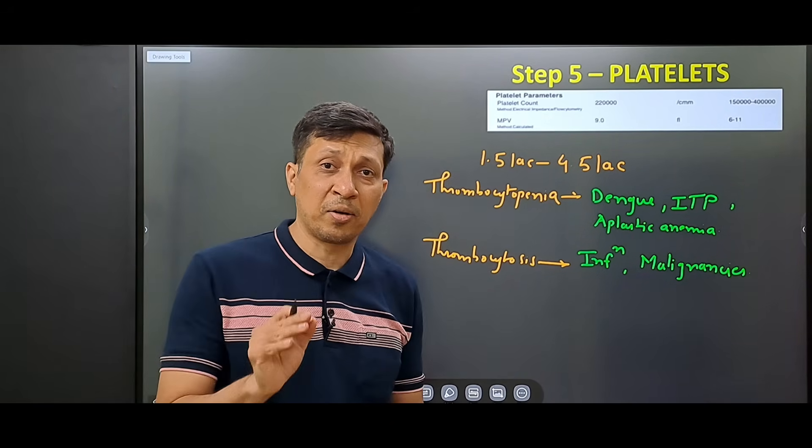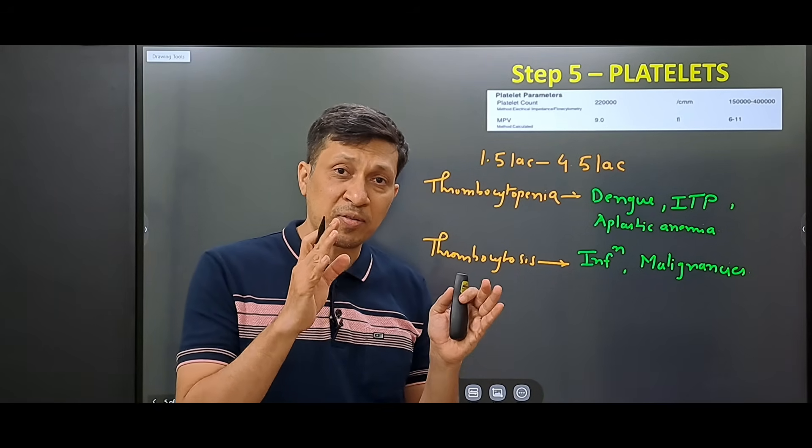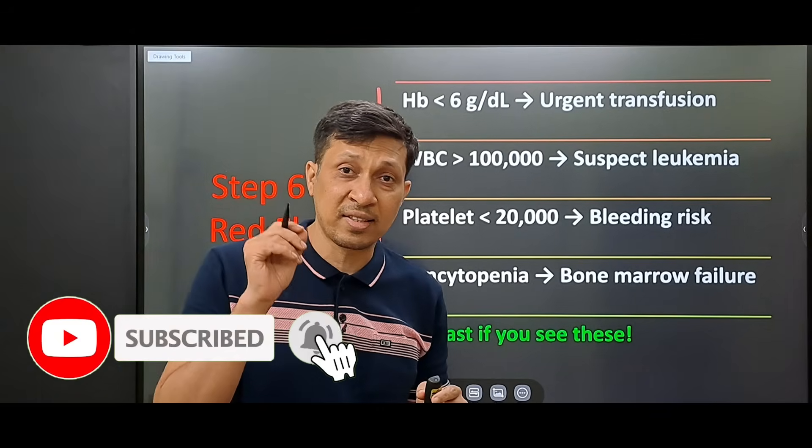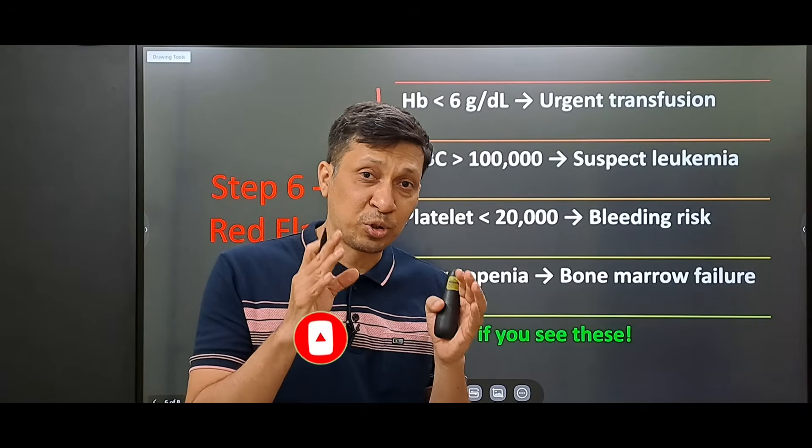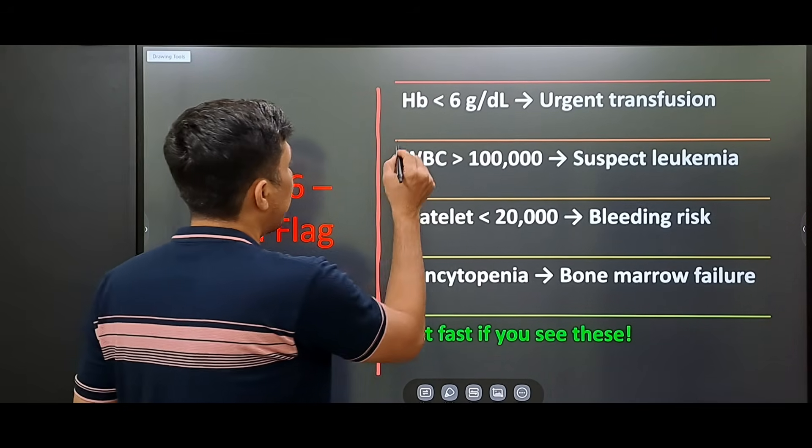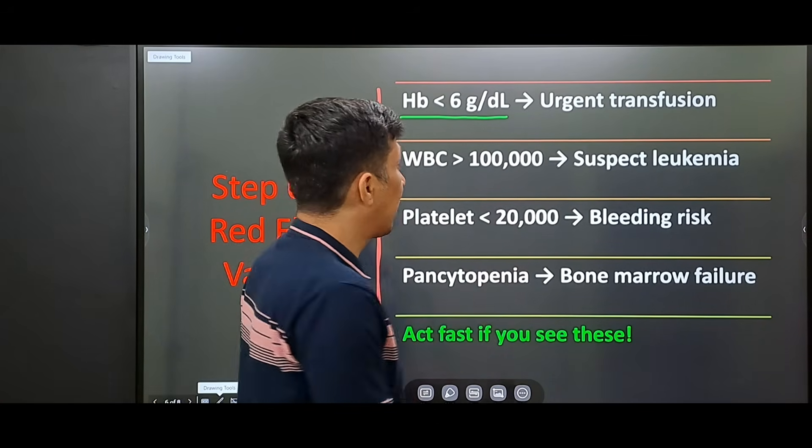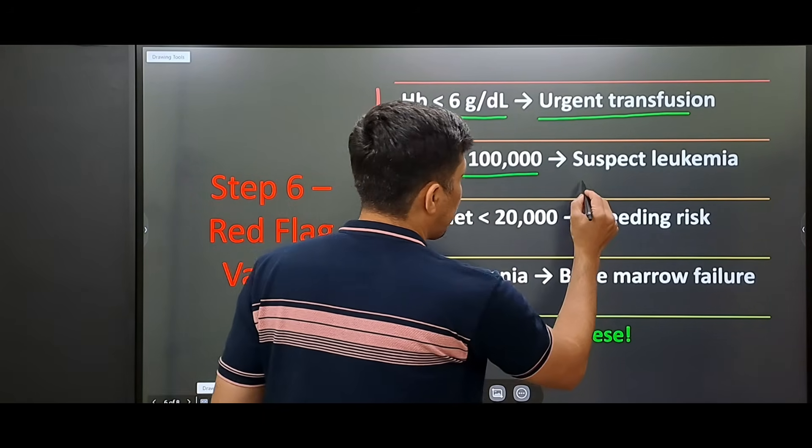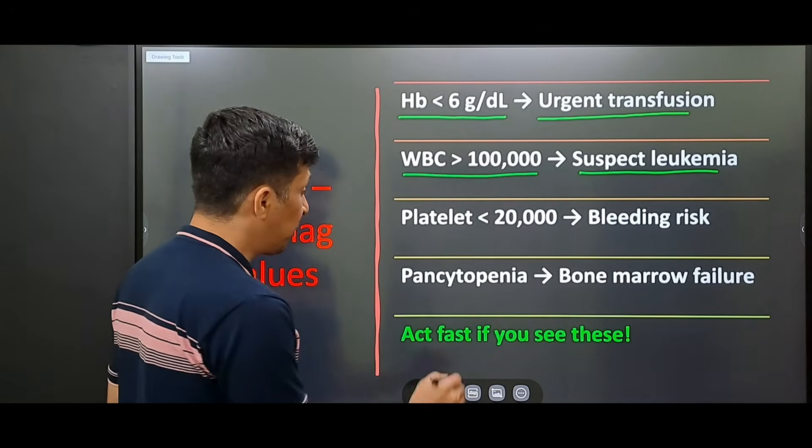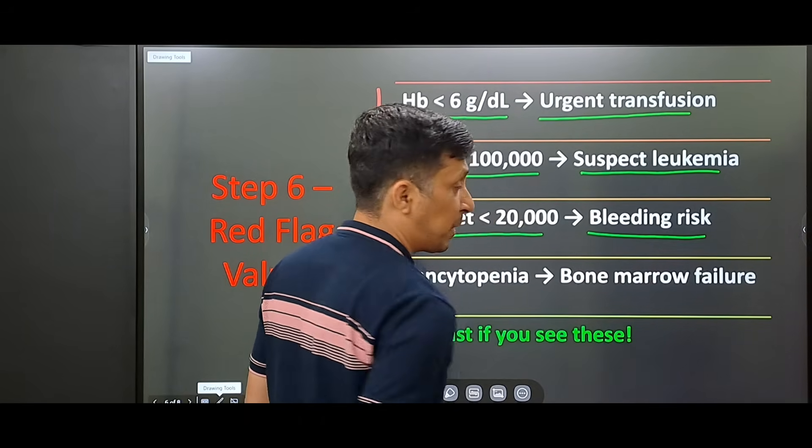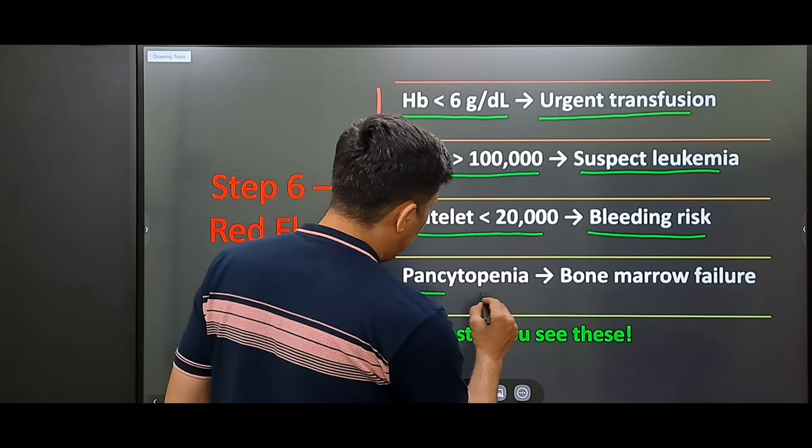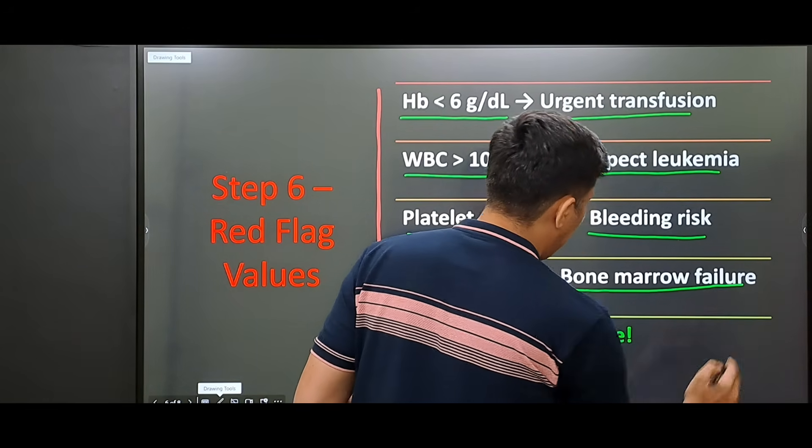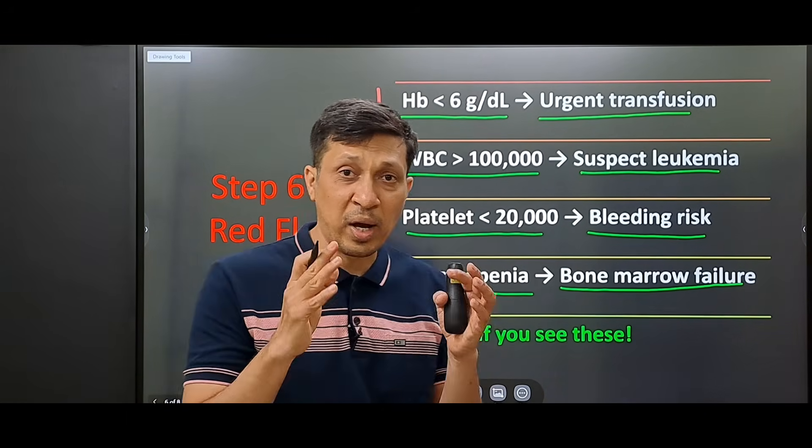These are the five steps of looking at the different types of cells: RBC, WBC and platelets. The sixth step is about the red flag signs, the values that are very important where you should act very fast. If hemoglobin is less than 6, that patient urgently needs blood transfusion. If the WBC is more than 1 lakh, then you should suspect leukemia. If the platelet count is less than 20,000, there is a bleeding risk and patient may need platelet transfusion. If there is pancytopenia, means all the parameters are low, then there is a possibility of bone marrow failure. In all these cases, you have to act very fast.